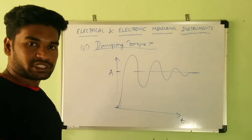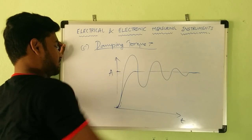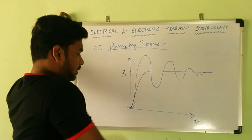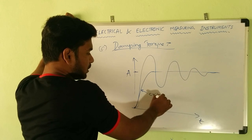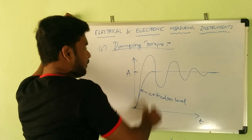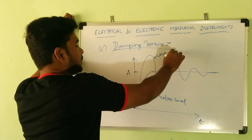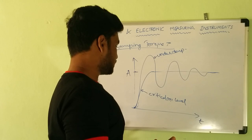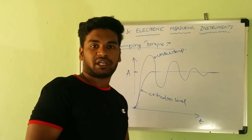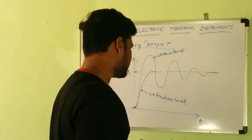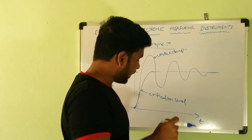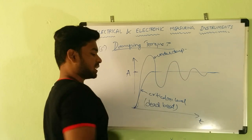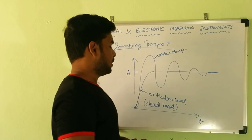But under damping is not ideal because you may want to measure instantaneously and can't wait for the pointer to settle. If I increase the damping a little bit more, I get a good response — the pointer reaches its steady state or equilibrium point very quickly. I call this kind of damping critical damping, also called level damping. An instrument with critical damping is said to be in a deadbeat condition.